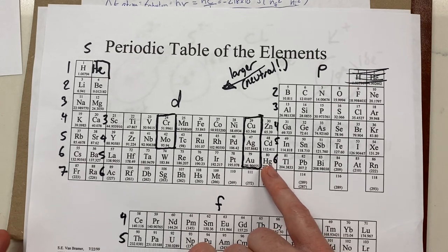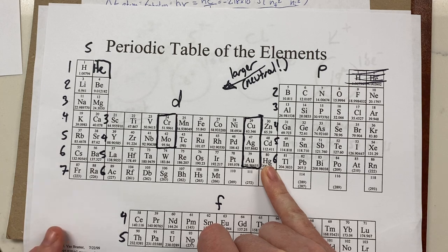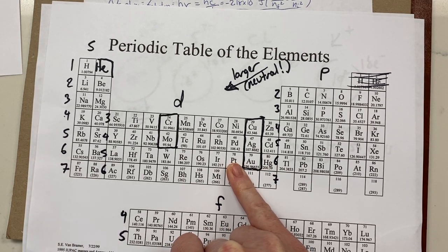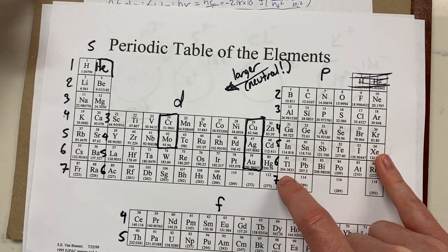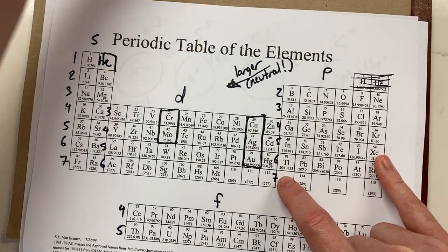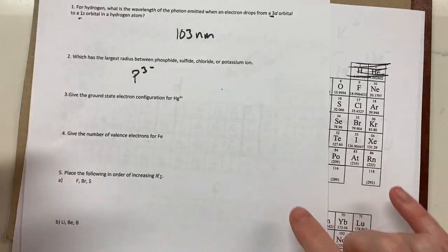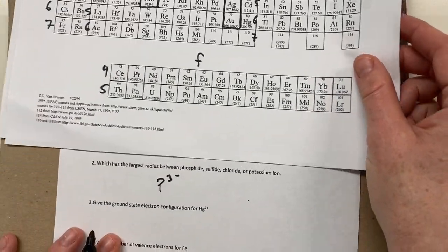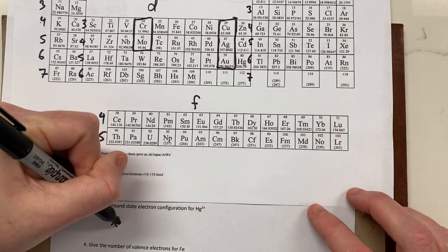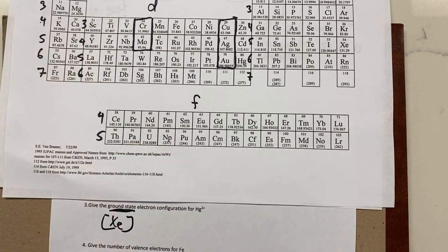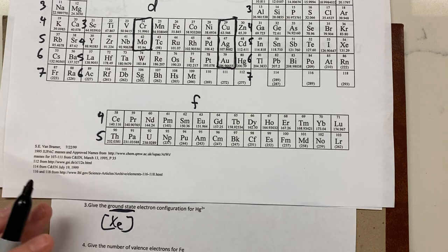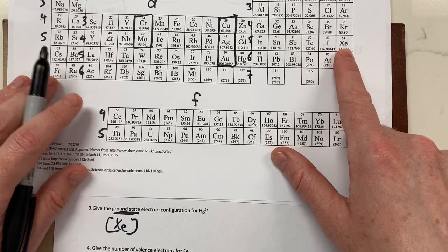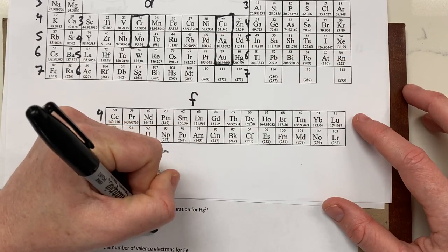Mercury is on the periodic table here. Since it's mercury 2-plus, we're taking away two electrons. First find the nearest noble gas — that's xenon. Then write xenon, and go through the 6s block — two electrons in 6s. After 6s, you have to hop down to the f block, going all the way through 4f14. Then go back and through the d block: 5d10.